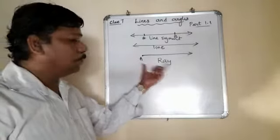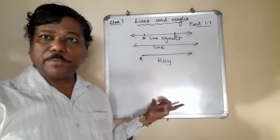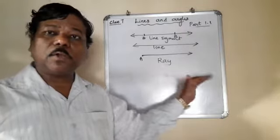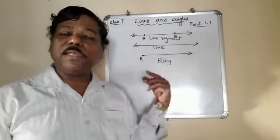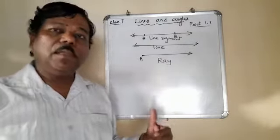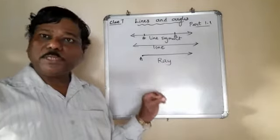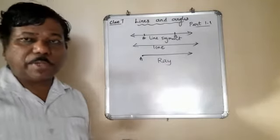Ray has got no magnitude because its length cannot be measured because it is infinitely extending on one side. There is a beginning point, initial point here, but there is no final point.